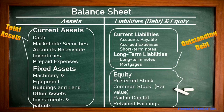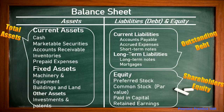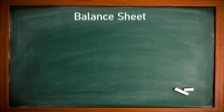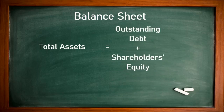Current liabilities and long-term liabilities — long-term notes, mortgages, and long-term loans — are known as outstanding debts, meaning money taken from outsiders. The equity side includes preferred stock, common stock, paid-in capital, and retained earnings, forming shareholders' equity. So a balance sheet has total assets on one side and outstanding debt plus shareholders' equity on the other.